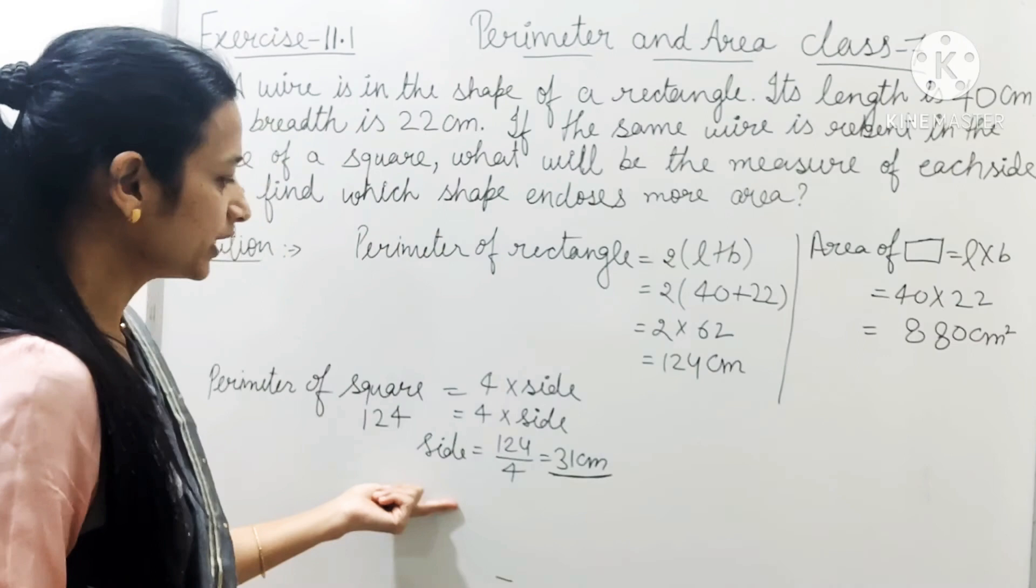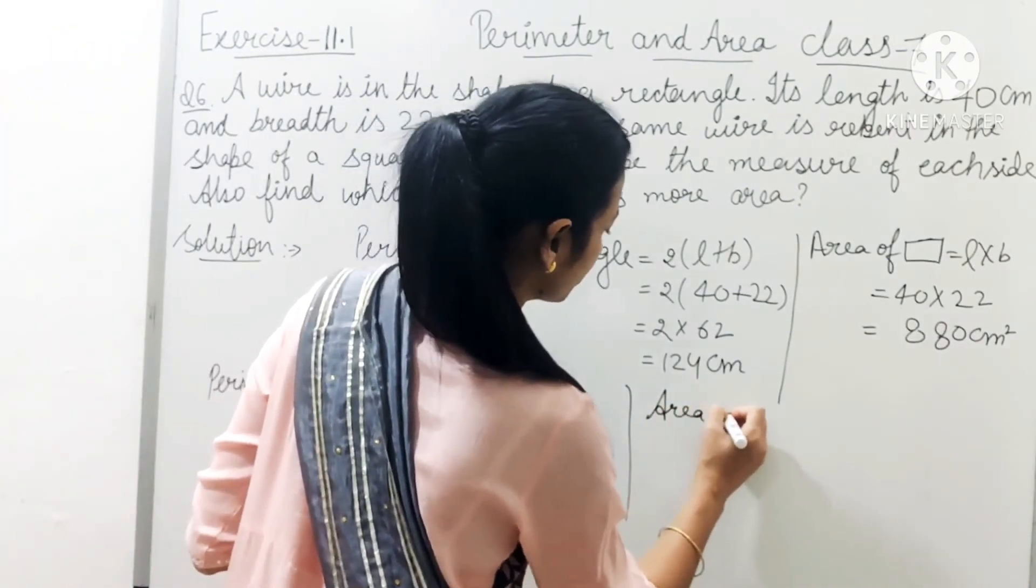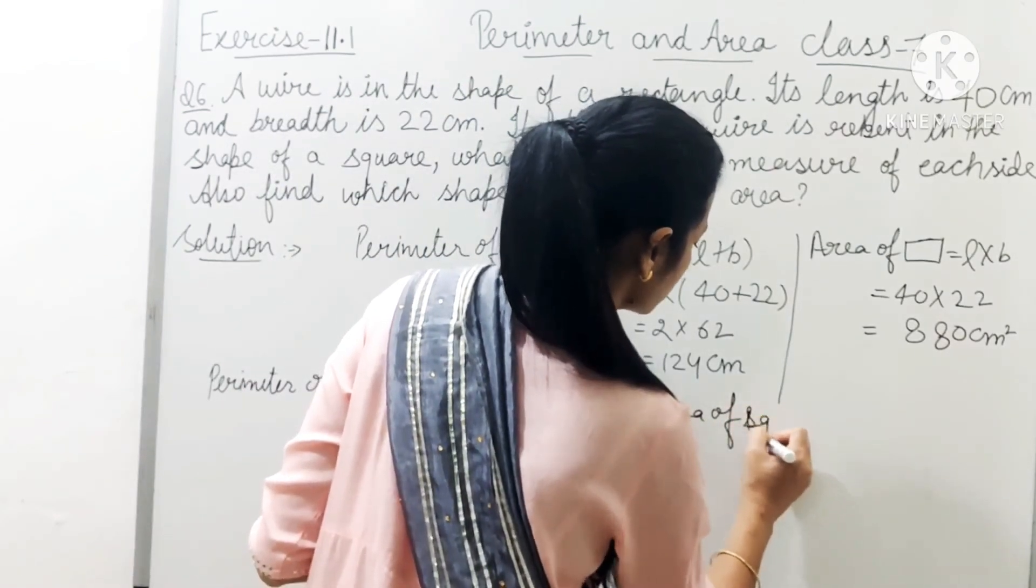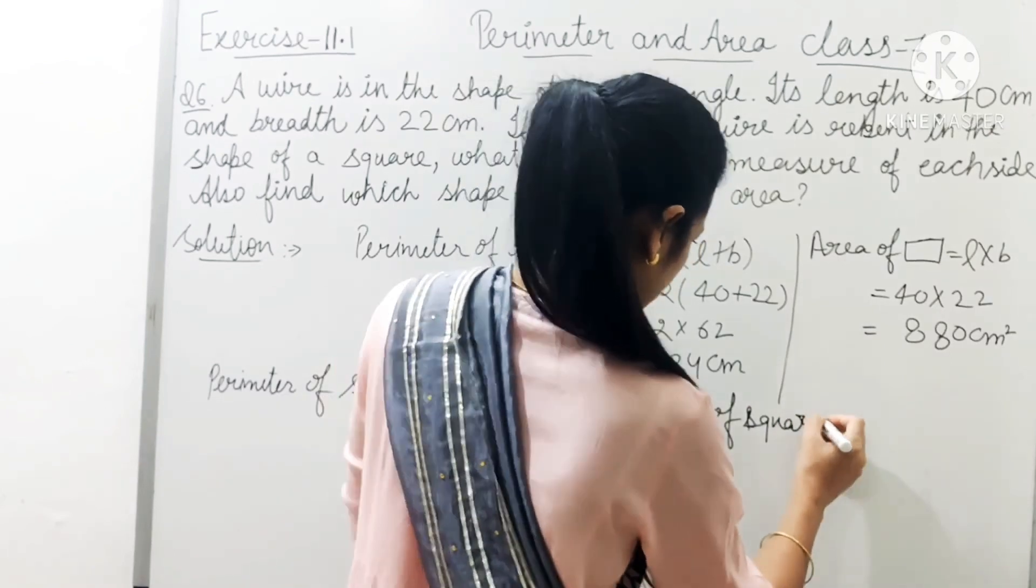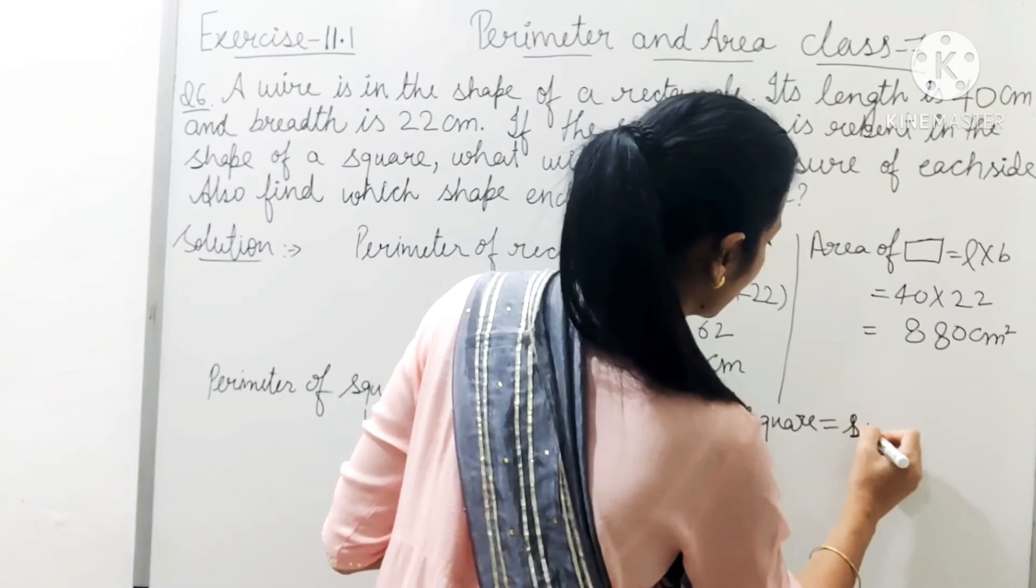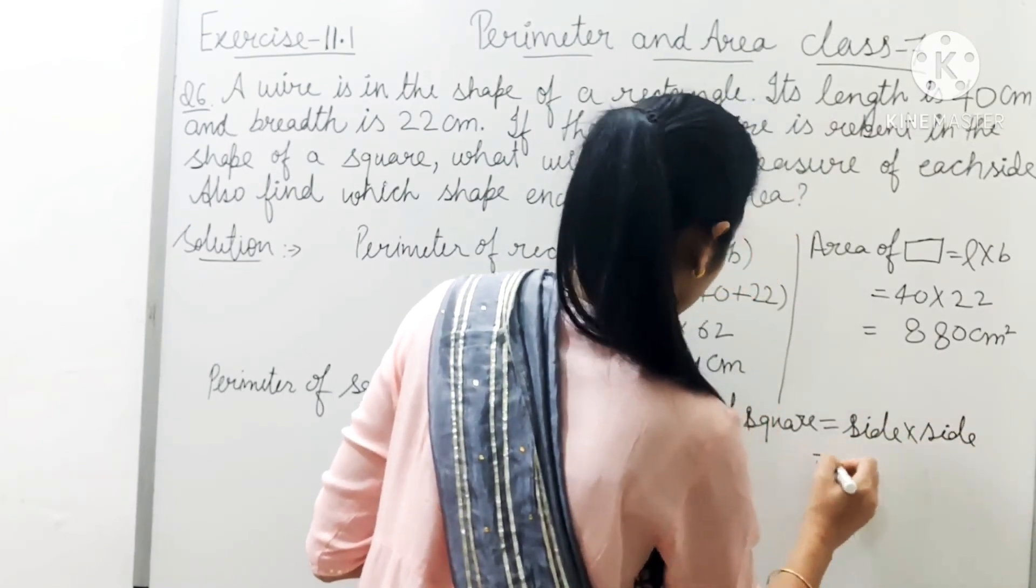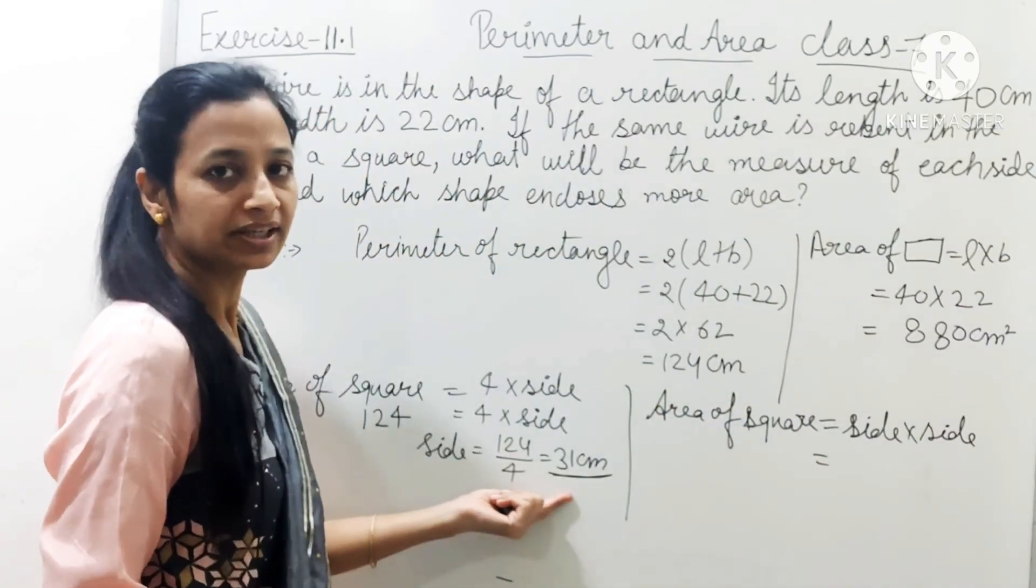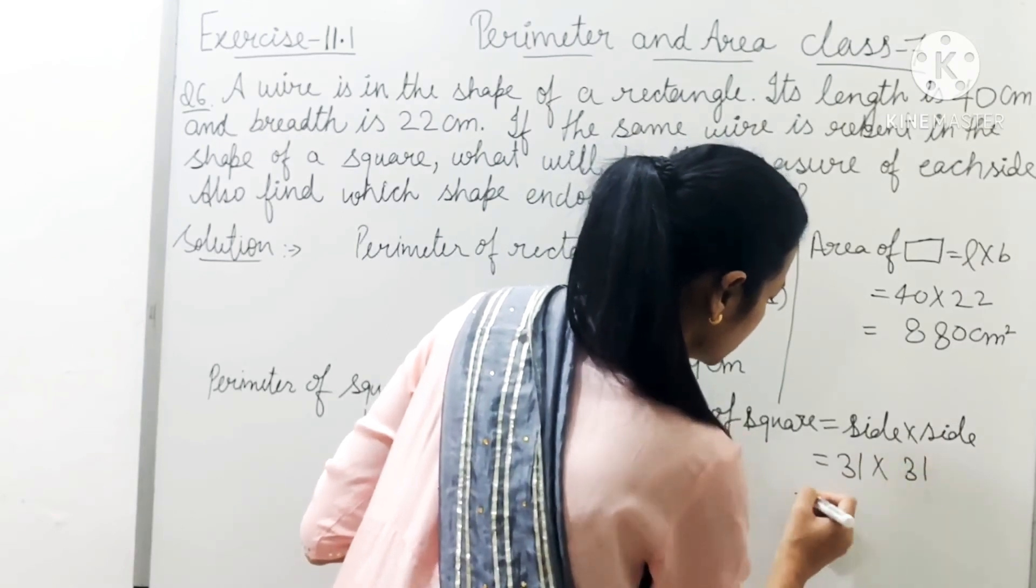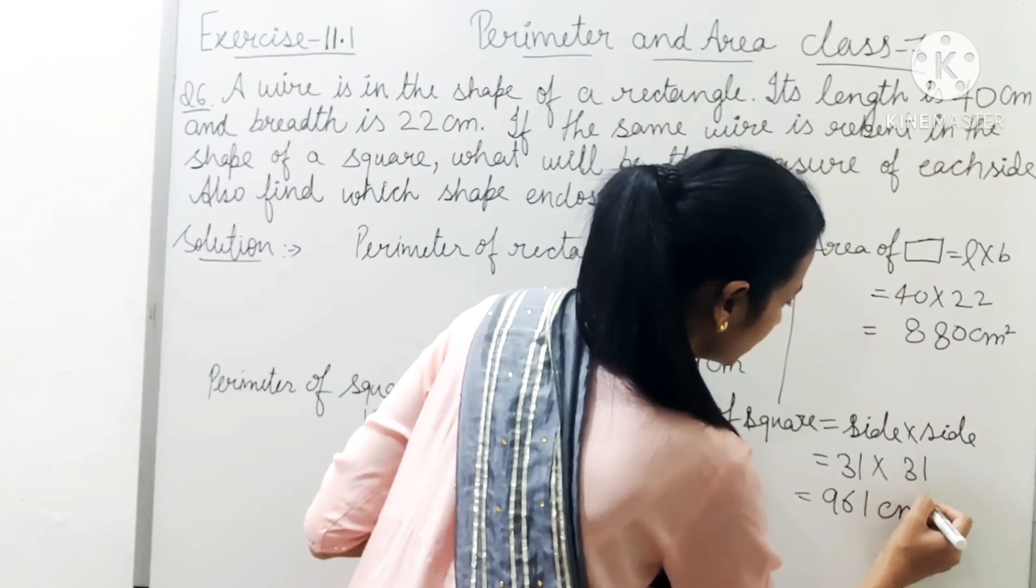Now we will find square's area. Area of square equals to side into side. And side we got as 31. So we write 31 into 31 equals to 961 centimeter square.